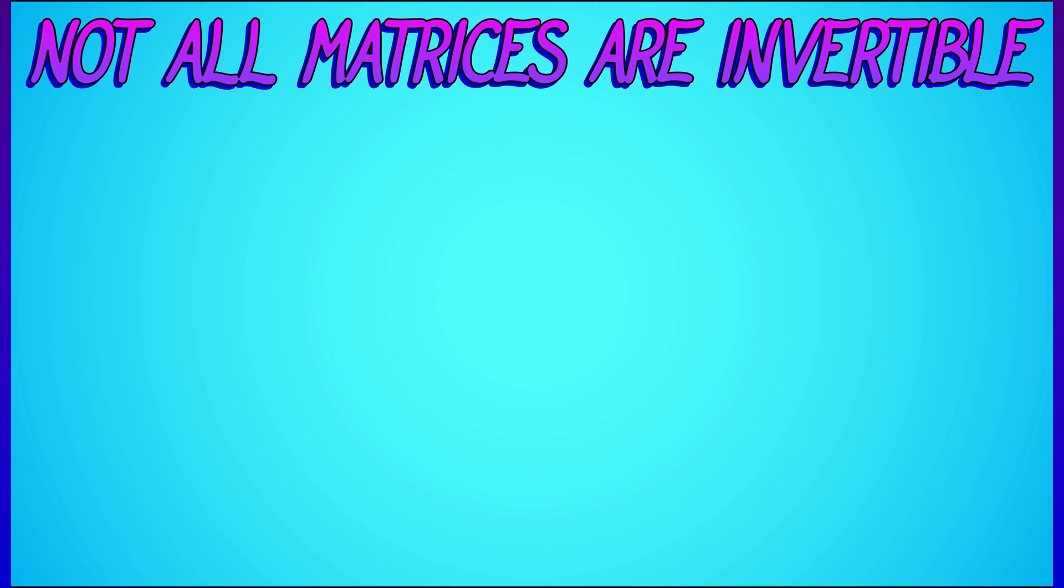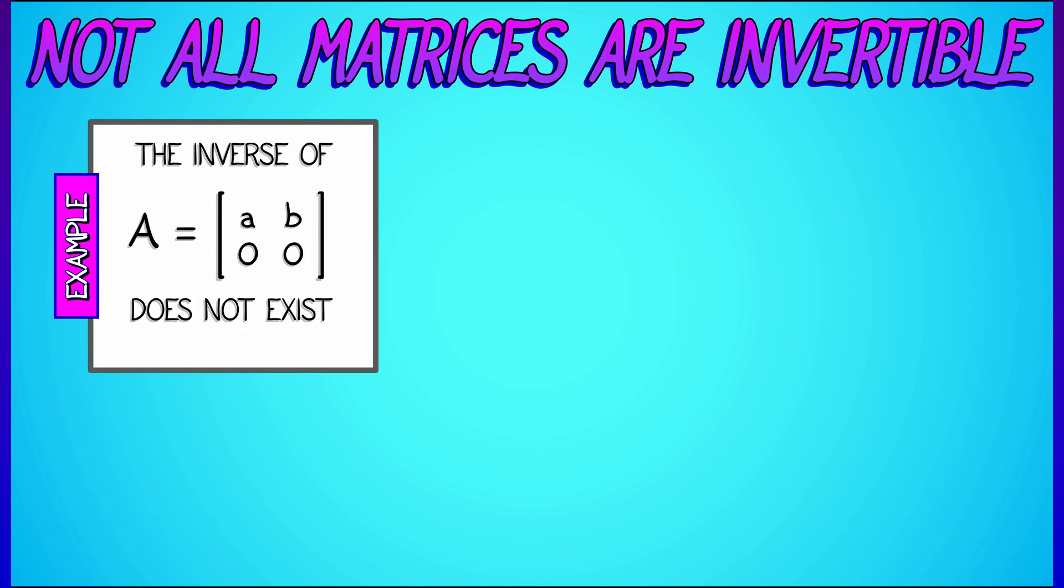Let's think about a simple example of a matrix that is definitely not invertible. Consider the following 2x2 matrix: a, b, 0, 0. Doesn't matter what a and b are. This matrix does not have an inverse.